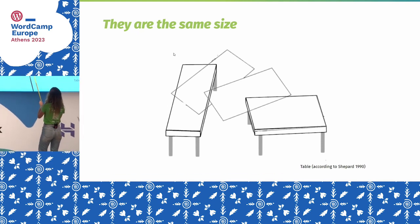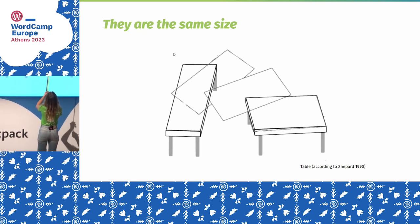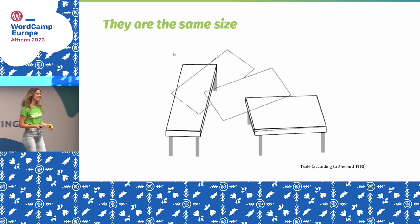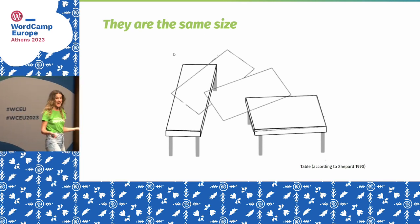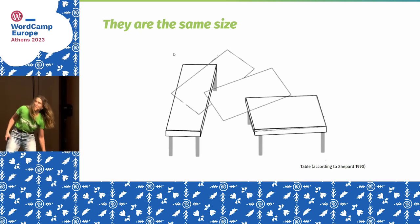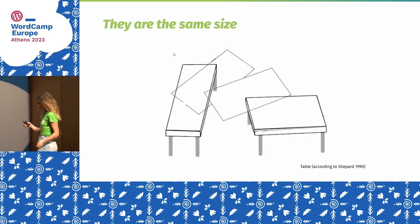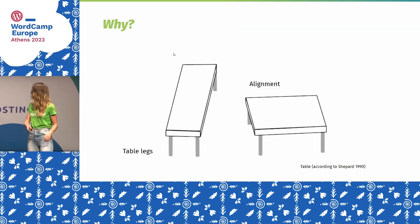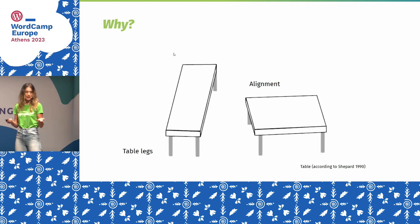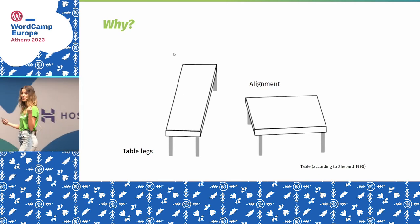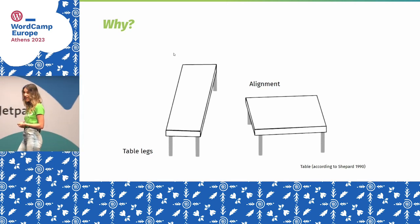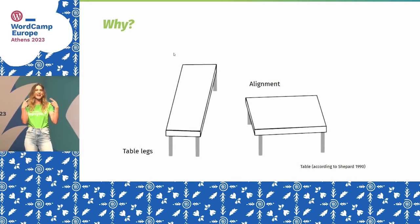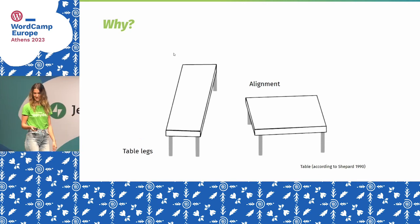It really is the same size. The reason we perceive it differently is because of the table legs and the alignment. Our brain is playing a little trick on us — that's also because of visual illusions.